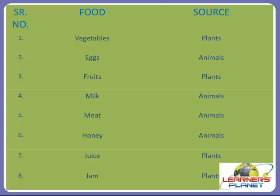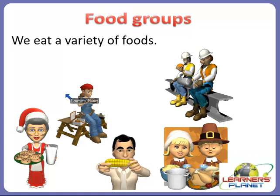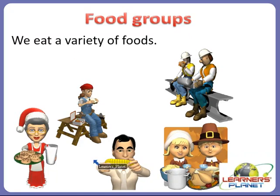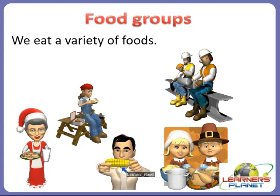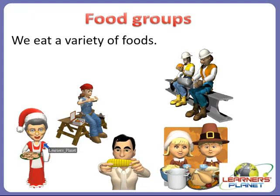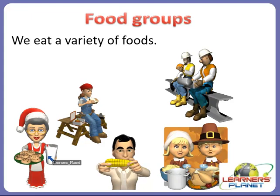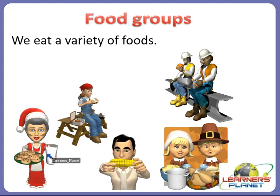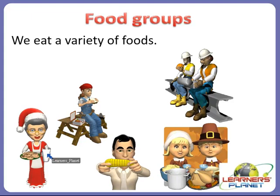Now we will start with the main topic — food groups. We eat a variety of foods. As you can see in this picture, this man is eating corn, which is a very important cereal grain, and a lady is serving milk and cookies, which are also part of our diet. Milk is very important for us because it builds strong bones and strong teeth.